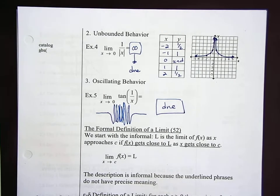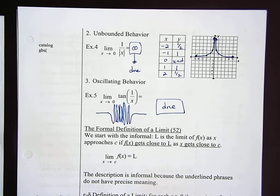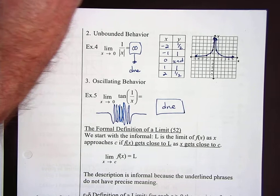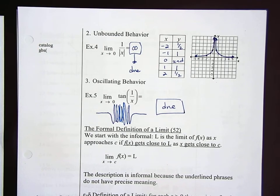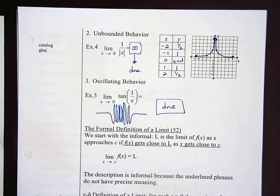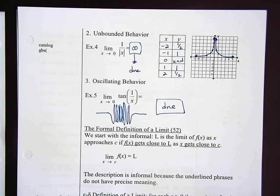The next thing we have is the Delta-Epsilon proof for the formal definition of a limit. This is not tested on the AP exam, and some of you may ask why we're going over it. I had a student go to the University of Utah, and they went over Delta-Epsilon proofs. Some students were freaking out because they'd had AP Calculus and never heard of it. So we're going to go over a couple of basic examples.